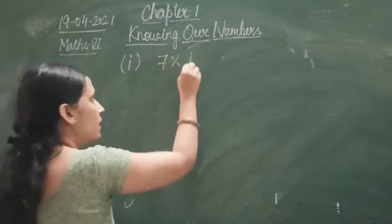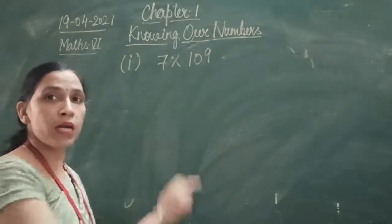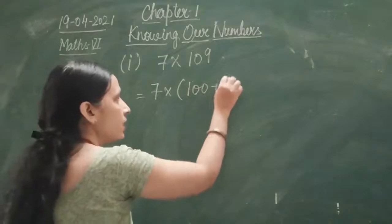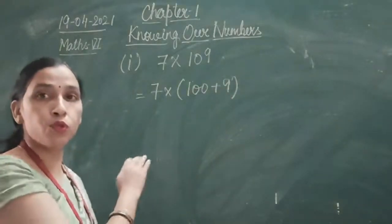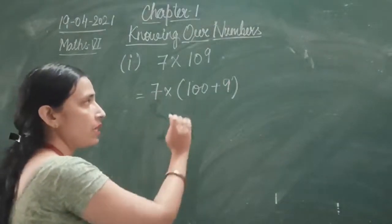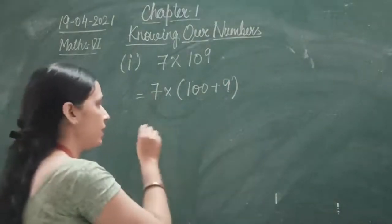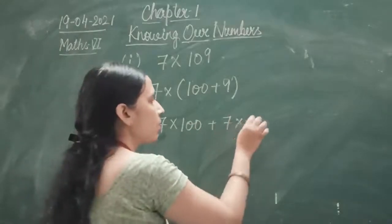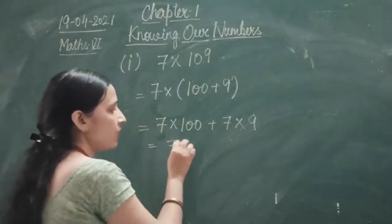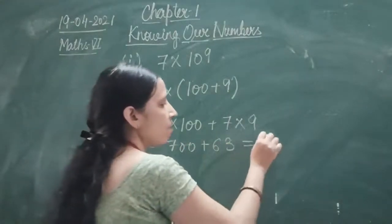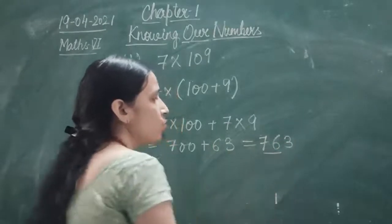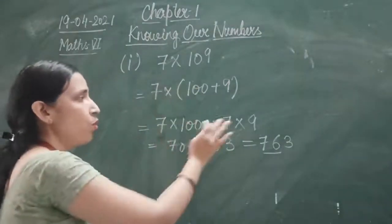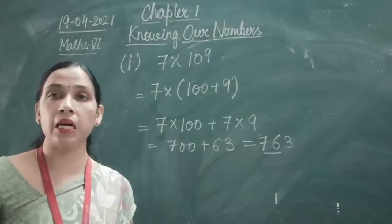First question: 7 multiplied by 109. This 109 I can write as 100 plus 9. After that, 7 will be multiplied by 100 as well as 7 will be multiplied by 9. So this will become 7 × 100 plus 7 × 9, which gives 700 plus 63, and the sum will be 763.